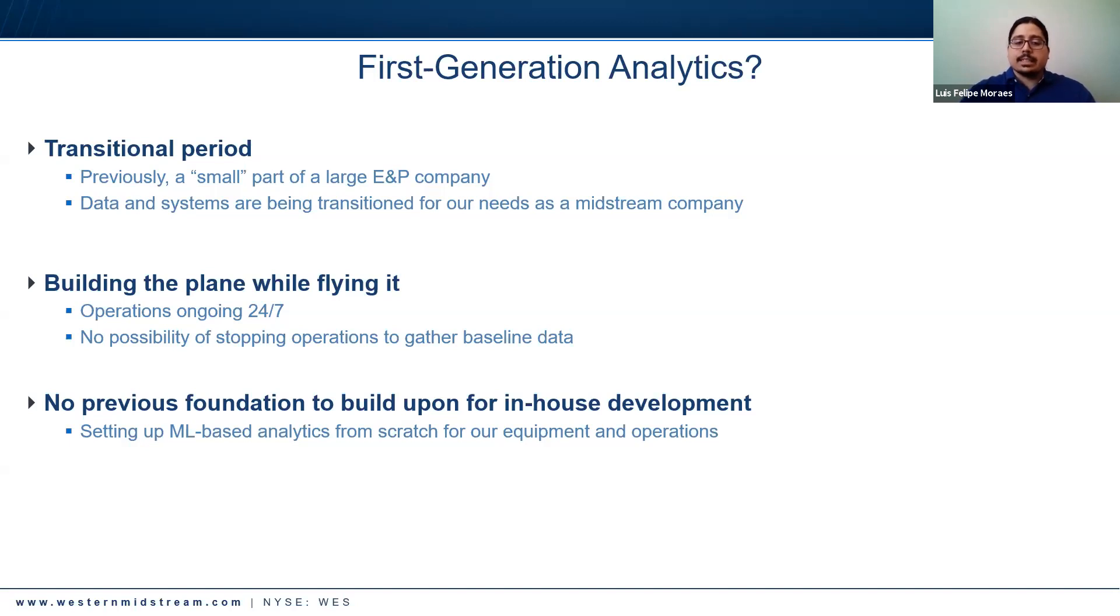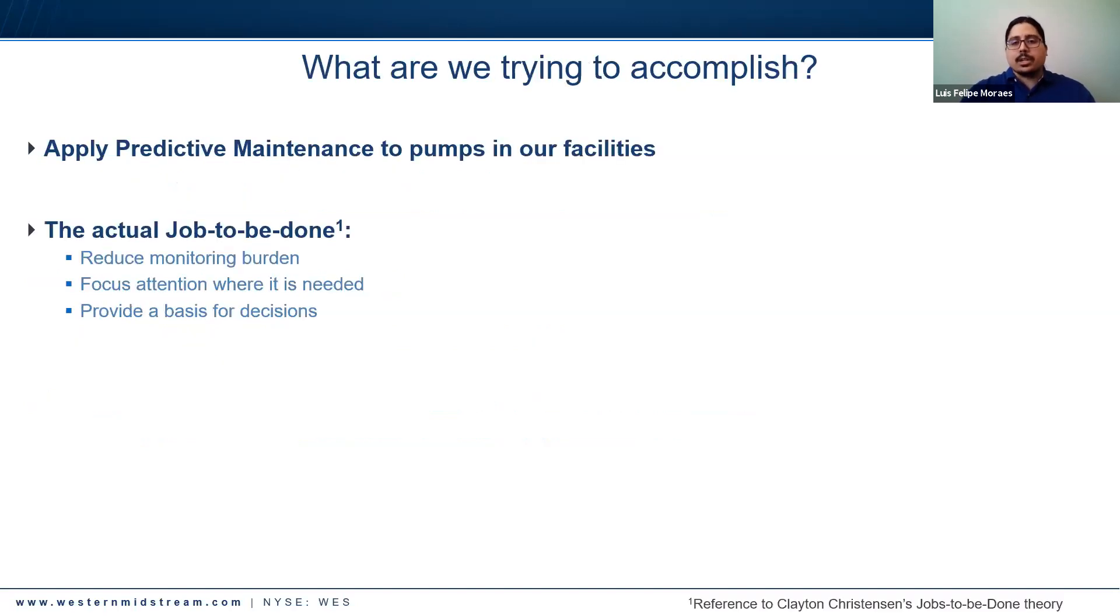So what are we trying to accomplish? In this presentation we're going over an application of predictive maintenance to pumps in our facilities. The actual job to be done is to reduce the monitoring burden on these pieces of equipment, focus attention where it is needed, and provide a basis for decisions. So whenever our operations team makes a decision, they can point to what our models told them. In other words, to help triage maintenance efforts.